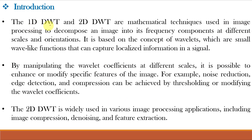The 1-dimension and 2-dimension Discrete Wavelet Transform are mathematical techniques used in image processing to decompose an image into its frequency components at different scales and orientations. It is based on the concept of Wavelets, which are small wave-like functions that capture localized information in the signal or image. By manipulating the Wavelet Coefficients at different scales, it is possible to enhance or modify special features of the image — for example, Noise Reduction, Edge Detection, and Image Compression.